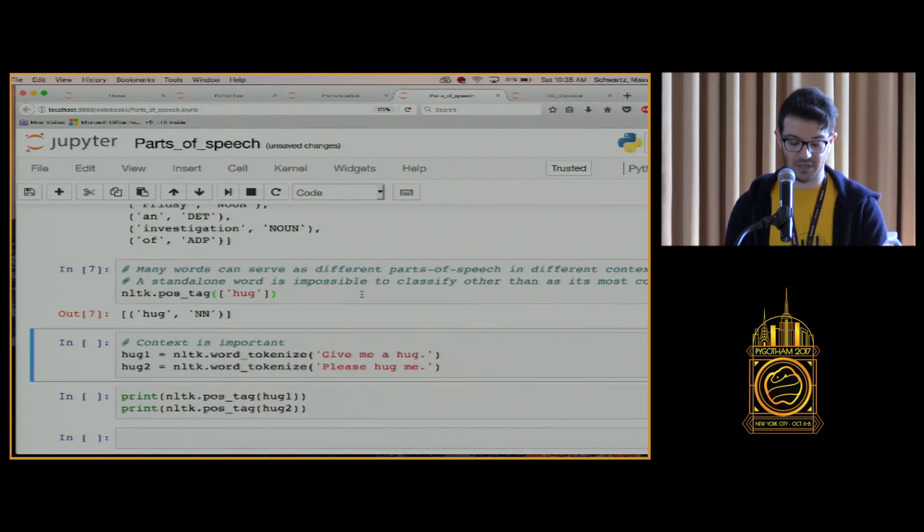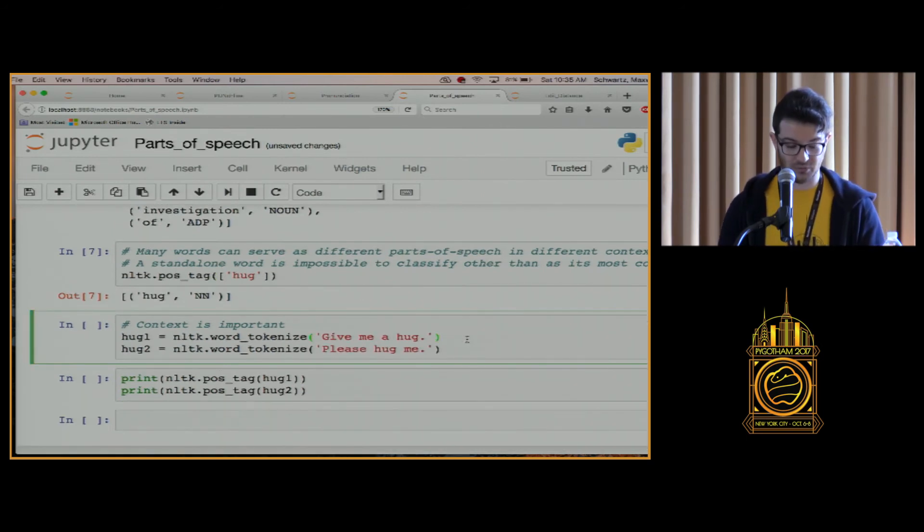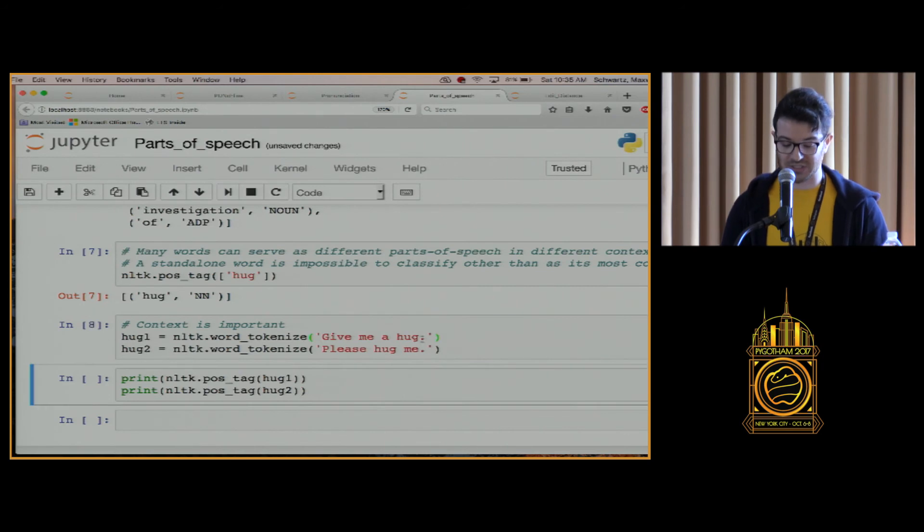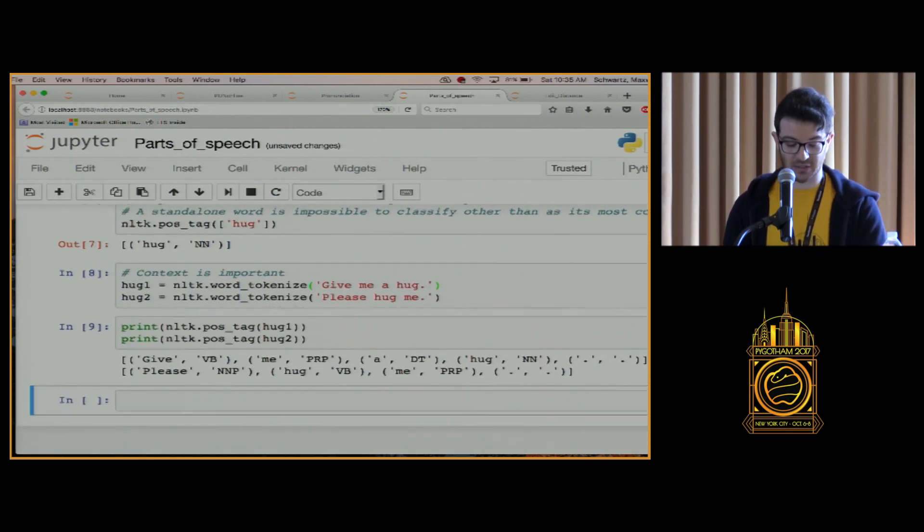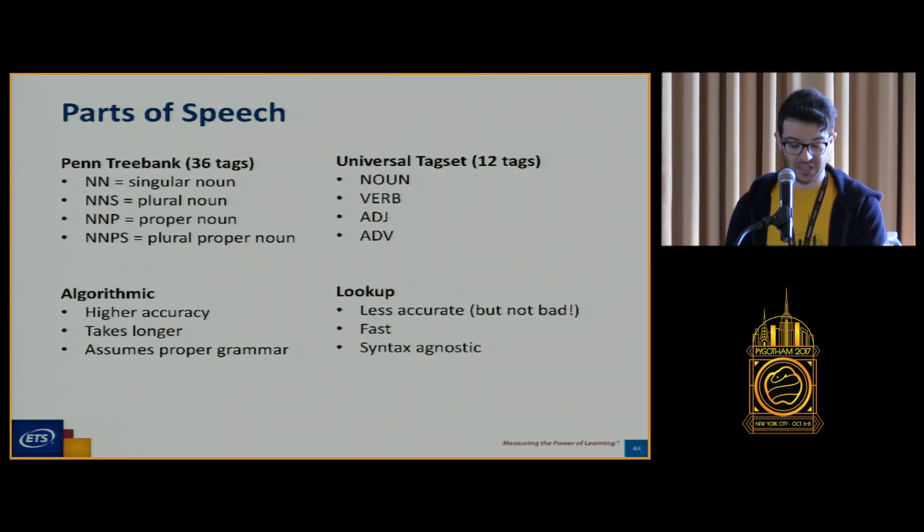We can see if we try to just get the part of speech tag on a single word, hug, it doesn't have a context and it's going to give us just its most common part of speech. It thinks it's a noun here. Maybe it is, it's just a single word. We can see in two different sentences where hug should be a noun here and a verb here. If we have context, it's going to get it correct. It's worth noting that it gets please wrong. I think please is an adverb here and it's calling it a proper noun, maybe because of the capitalization, but it's still getting it wrong even in an actual grammatical sentence. Okay, so that's parts of speech.